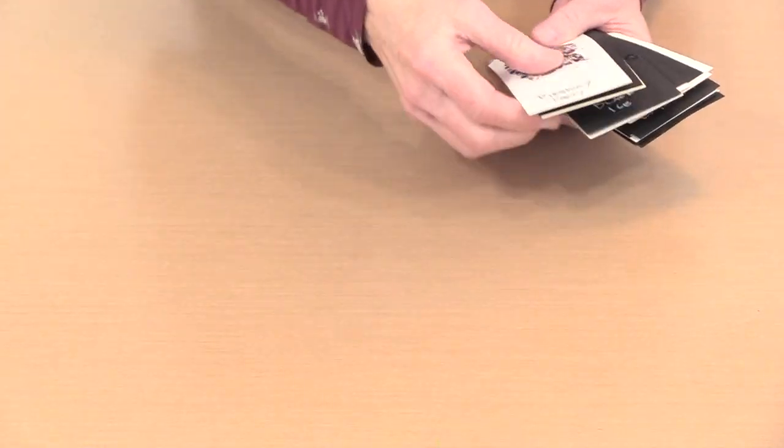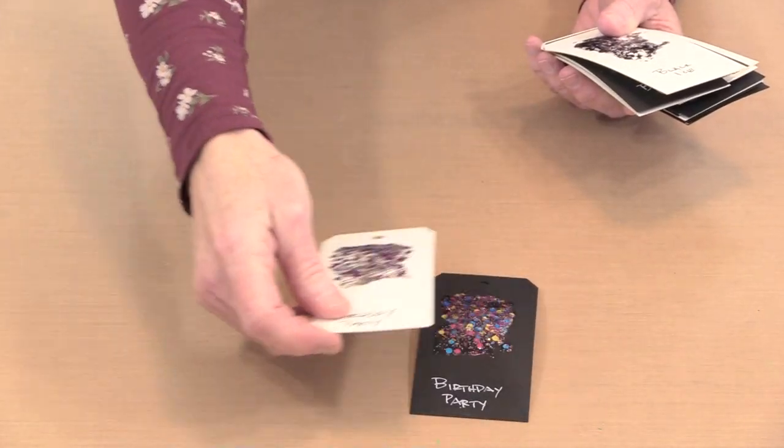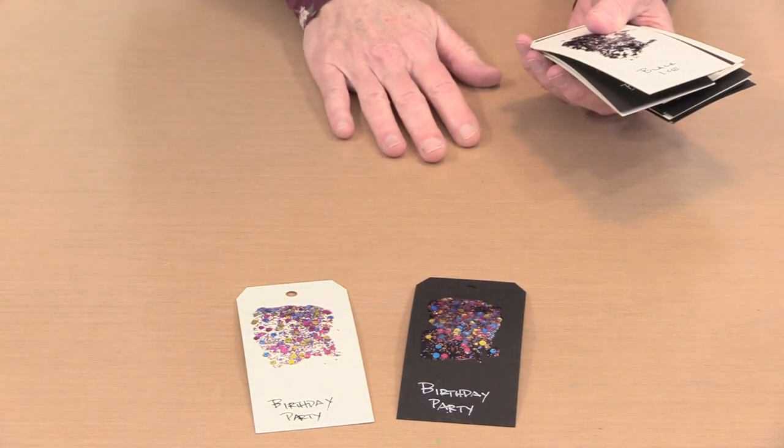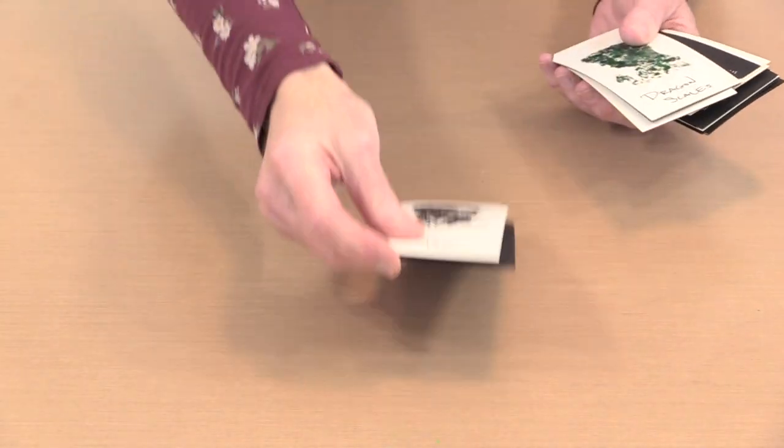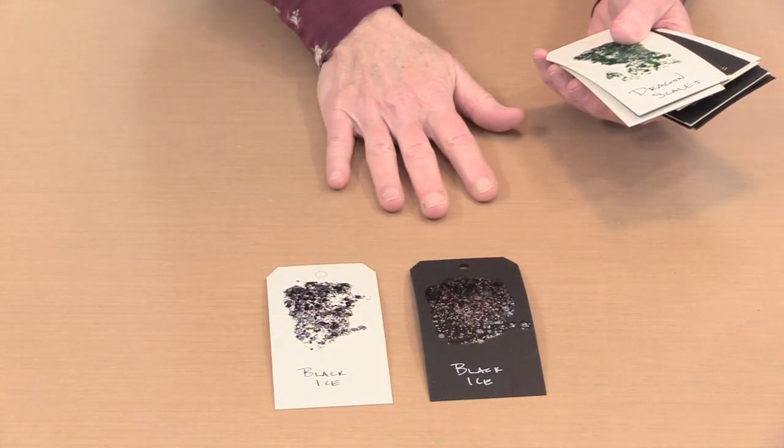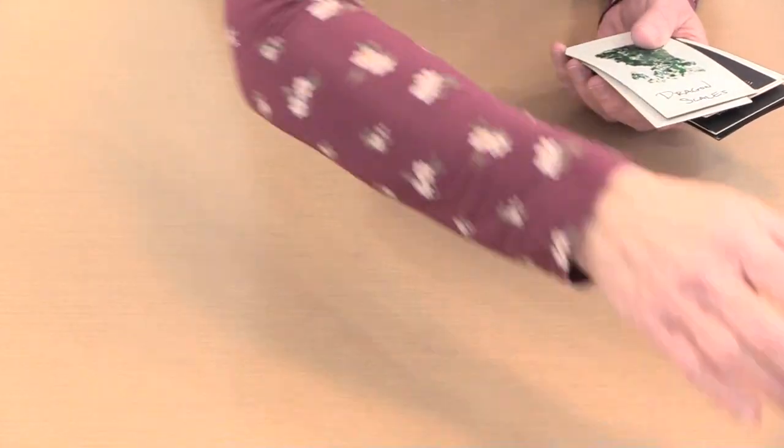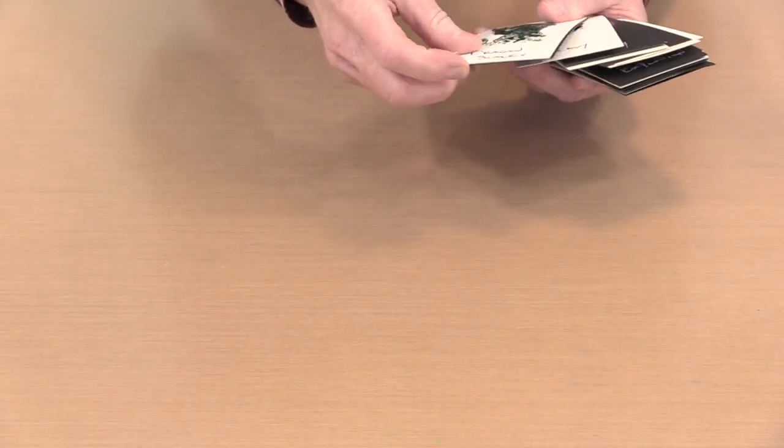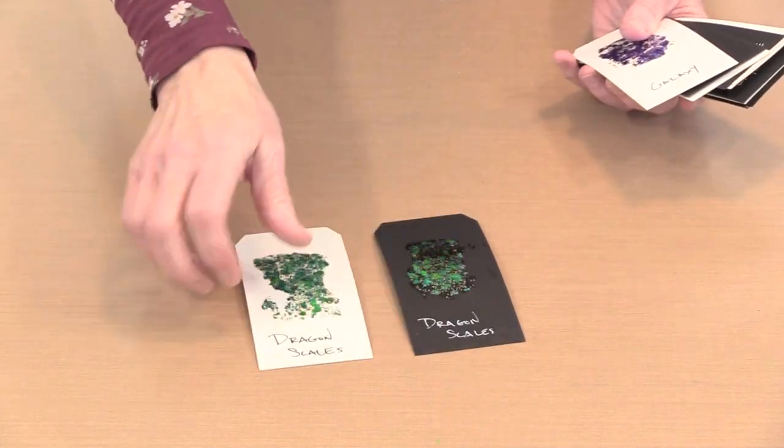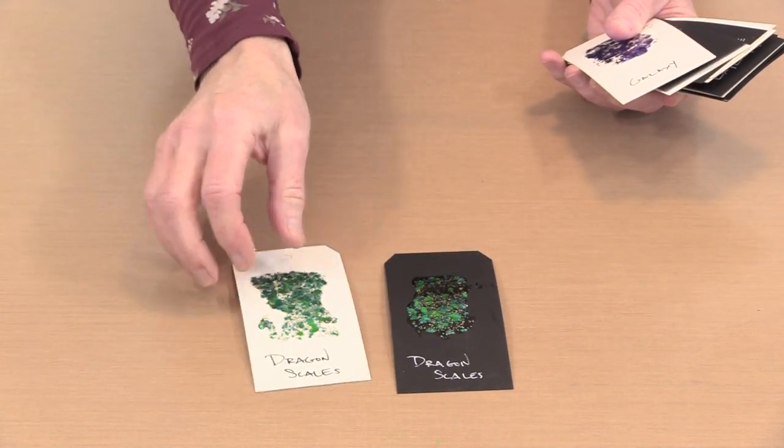So here we have Beach Vibe. Then we have Birthday Party. Up next is Black Ice. And then one of my favorites, this is Dragon Scales. It's a pretty green with some turquoise in it.